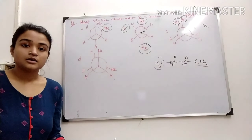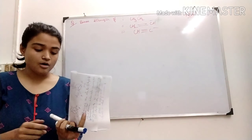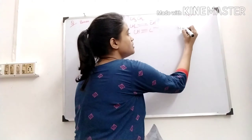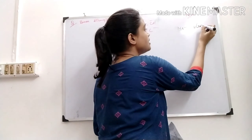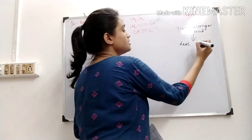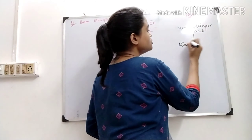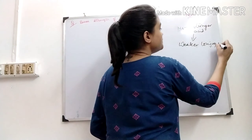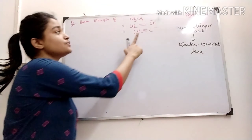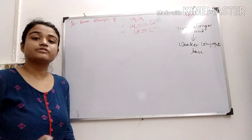Next, we have to arrange the base strength of these three compounds. We know that a stronger acid has a weaker conjugate base, and vice versa. If we determine which one is the stronger acid, we can arrange the strength of the base.